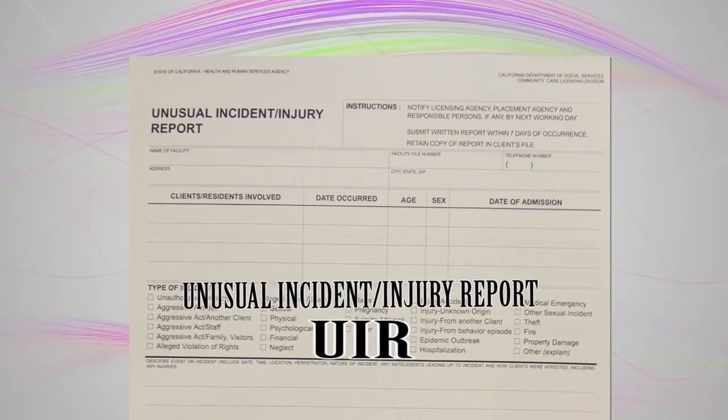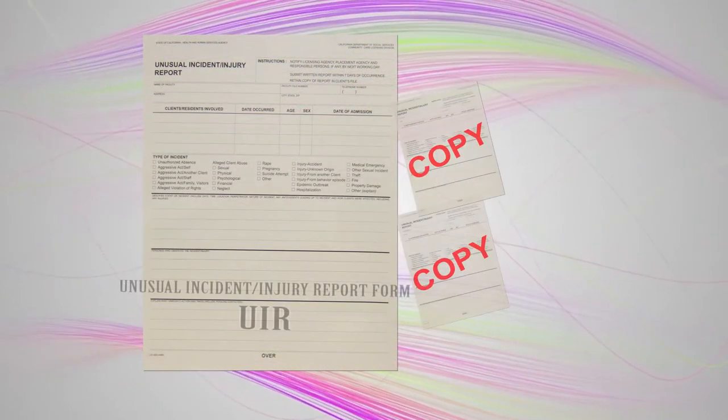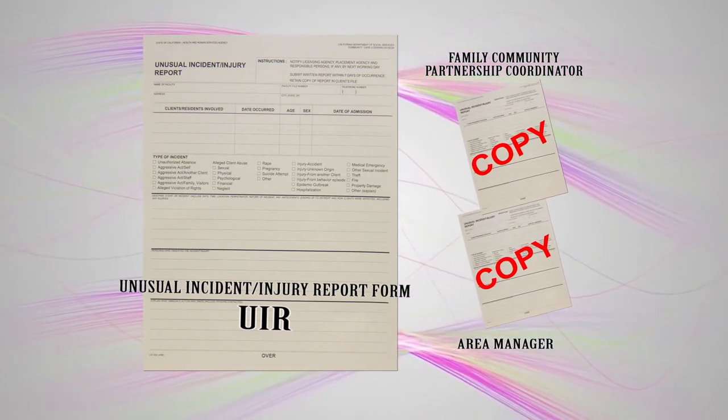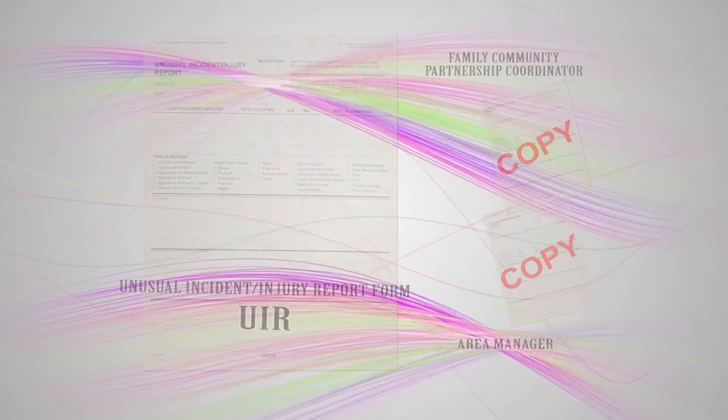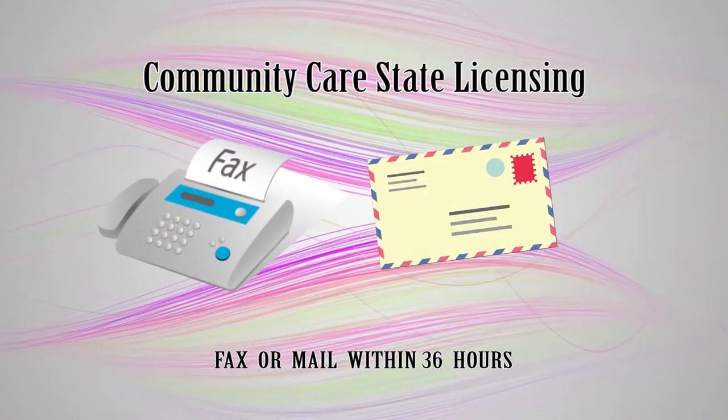The second form you will complete is the Unusual Incident Report form. This is a California state licensing form. Complete the Unusual Incident Report form. If the incident occurs while children are in our care, the mandated reporter must contact Community Care State Licensing within 24 hours. Immediately send copies of the UIR to the Family Community Partnership Coordinator and the Area Manager. The UIR must be faxed or mailed within 36 hours to Community Care Licensing.